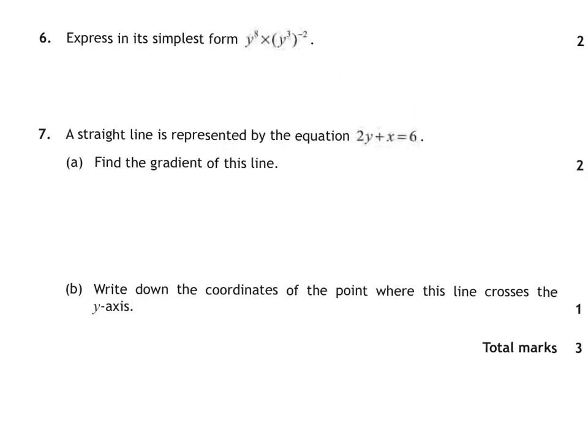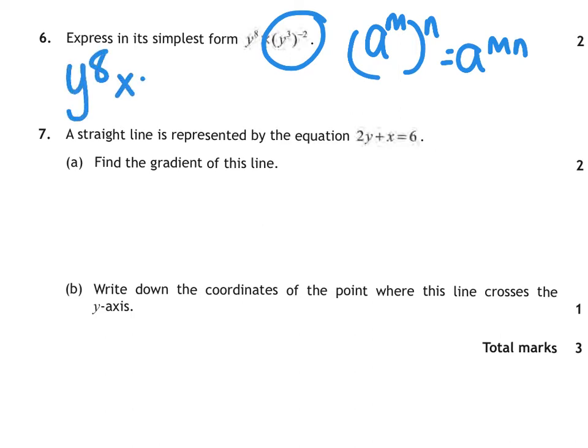Question 6, expressing its simplest form. So a bit of BODMAS. BODMAS means you do this power bit first. Y cubed to power minus 2, that uses the rule that if you have a power raised to a power, you then just multiply them. So we times the 3 and the minus 2 together. This gives us Y to the power of 8 times Y to the negative 6. And then when you're multiplying, you add the power, so 8 add minus 6 is just 2. So the final answer is Y squared.